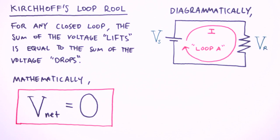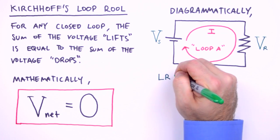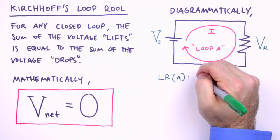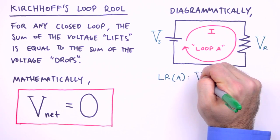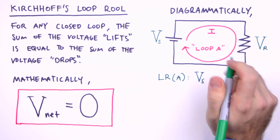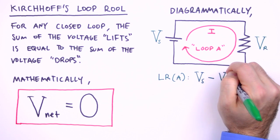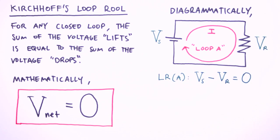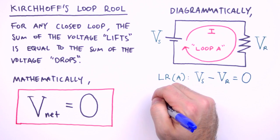Note that for most circuits, currents and loops won't coincide and need to be explicitly labeled separately. To apply the loop rule to loop A, we'll travel clockwise around the loop, summing voltages. Starting on the bottom left, we'll have positive V sub S, a voltage lift. And then moving around to the other side, we'll have negative V sub R, a voltage drop. We set that equal to zero, and that is how we apply the loop rule.